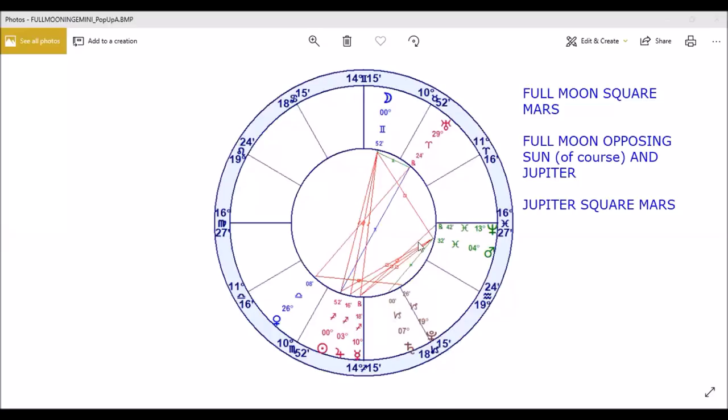Now, the last one I want to cover here is that we've got Jupiter, as you can see, in a square to this Mars energy. This, remember Jupiter with his mouth, man. Sometimes Jupiter is just a little bit abrupt. He lacks a little bit of tact sometimes with what's coming out of his mouth. So you're under a square here. Again, this is pressure. And it's in a square to Mars who's impulsive.